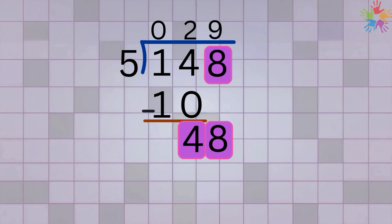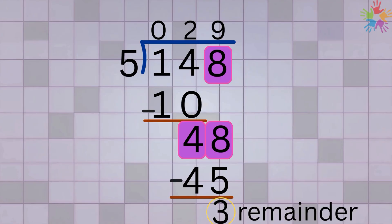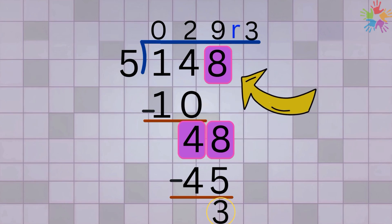We ask: how many times does 5 go into 48? Nine times, because 5 times 9 is 45. We write 9 on top above the 8, multiply: 9 times 5 is 45, subtract: 48 minus 45 equals 3. We're out of digits with 3 left over — that's our remainder. So when we divide 148 by 5, the answer is 29 remainder 3. And that's it for today's lesson on long division!